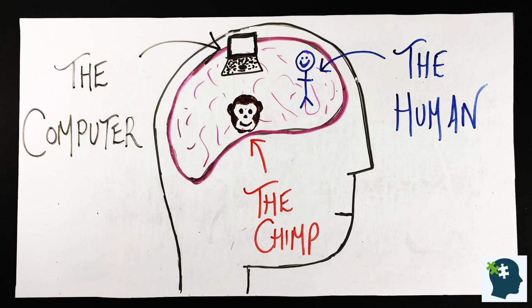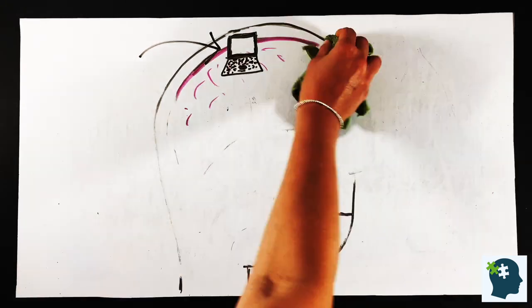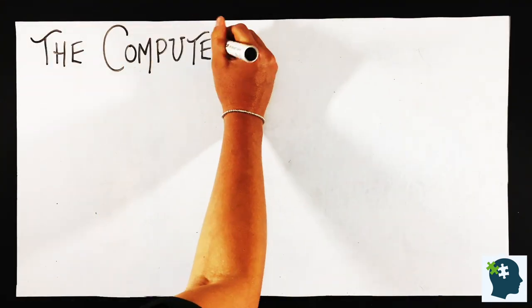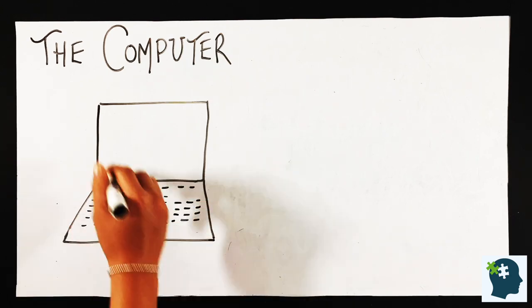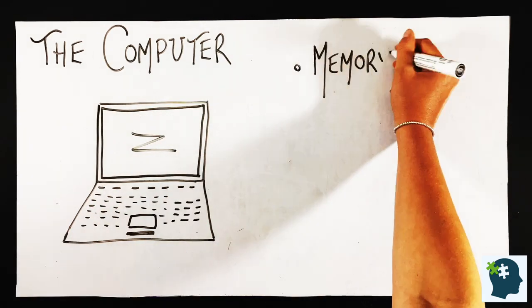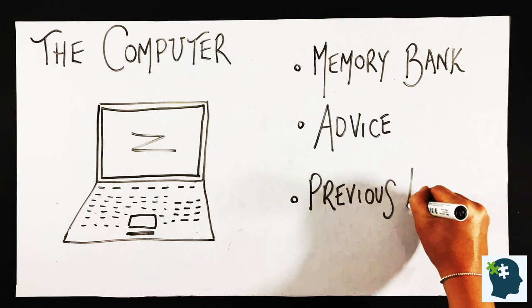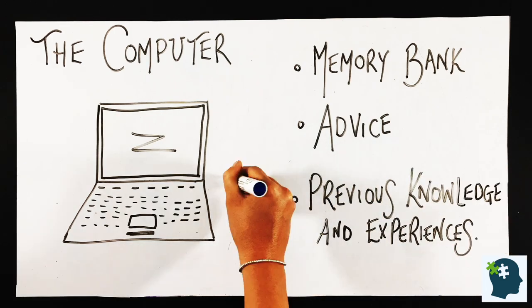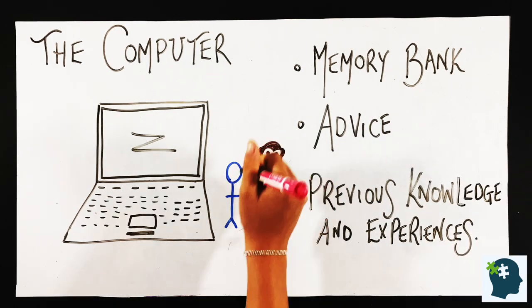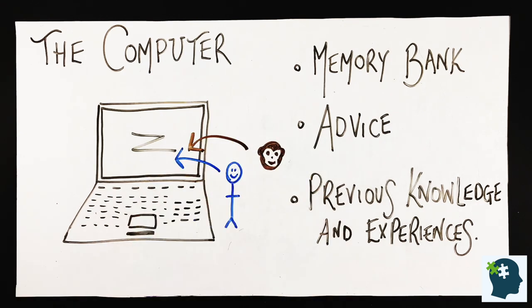The last in the trio is the computer. When the human and the chimp go into action, they call upon the computer for advice. The computer is the memory bank, a storage area for our thoughts and behaviours, that advise us of our previous experiences and knowledge. It recognizes patterns and makes decisions for us, forming and storing behaviours and beliefs that we learn. The information stored in there can be helpful or unhelpful.